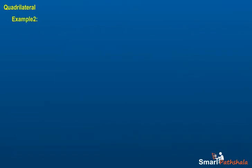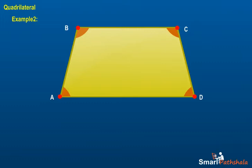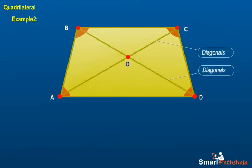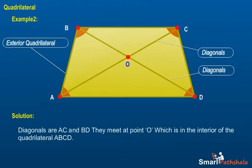Example 2: Draw a rough sketch of a quadrilateral ABCD. Draw its diagonals. Name them. Is the meeting point of the diagonals in the interior or exterior of the quadrilateral? Solution: Diagonals are AC and BD. They meet at point O, which is in the interior of the quadrilateral ABCD.